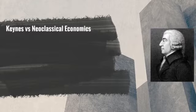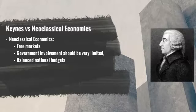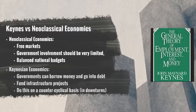Throughout the 19th and early 20th centuries, economic thought had been dominated by neoclassical economics. This system believed fundamentally in free markets, that government involvement should be very limited, and that there should be balanced national budgets. In 1936, Keynes outlined his opposition to the neoclassical economic paradigm in his most important book The General Theory of Employment, Interest and Money.